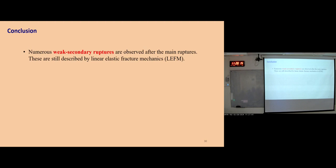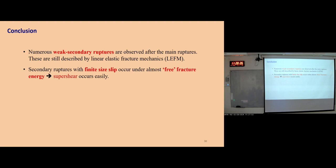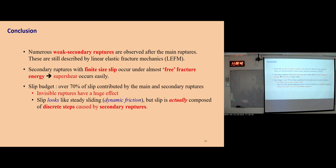In conclusion: we find numerous weak secondary ruptures observed after the main rupture, all described by LEFM. We find these secondary ruptures with finite slip size occur under nearly zero fracture energy. This near-zero fracture energy also explains why super-shear can occur so easily. We show the slip budget: over 70% of slip is contributed by the main and secondary ruptures, showing that invisible ruptures have a huge effect. All the slip looks like steady sliding, but it's actually combined with many discrete steps caused by secondary ruptures. Finally, these secondary ruptures show a statistical connection to aftershocks. Thanks for your listening.